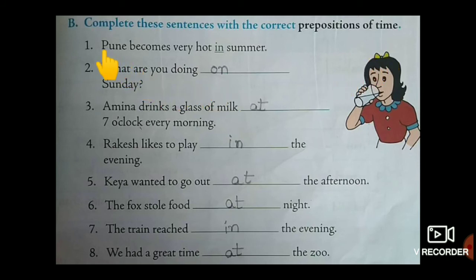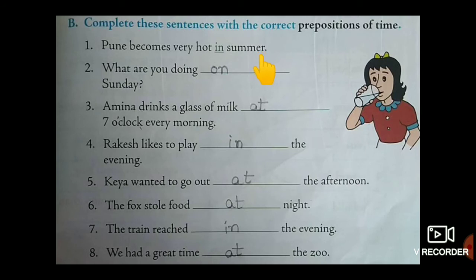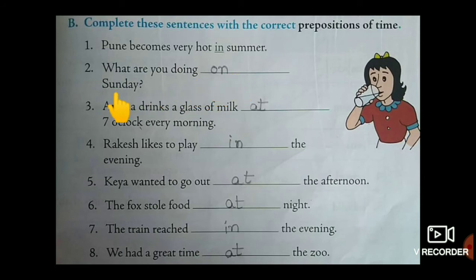First one: Pune becomes very hot in summer — it's a season, so before a season we always write the preposition 'in,' whether it's summer, winter, or rainy season. Next: what are you doing on Sunday? Before days, we use 'on' — for weekdays or dates.